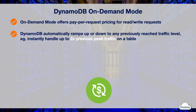With on-demand capacity, DynamoDB can automatically ramp up or down to any previously reached traffic level. On-demand capacity can instantly handle up to double the previous peak traffic on a table. For example, if your application previously reached 10,000 reads per second as peak traffic, on-demand capacity can instantly handle sustained traffic of up to 20,000 reads per second. If the application then reaches 20,000 reads per second, on-demand capacity automatically ramps up to handle 40,000 reads per second.